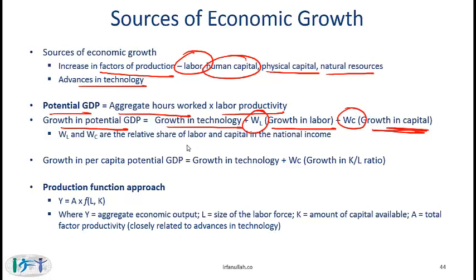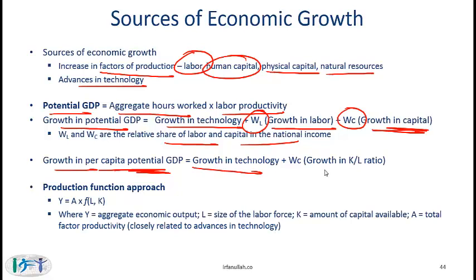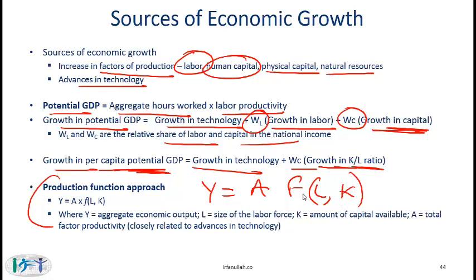The W's shown here are the relative shares of labor and capital in national income — material covered in more detail at level 2. Economists are also concerned with growth in per capita potential GDP, which measures the actual wealth of a nation. Growth in per capita potential GDP is based on growth in technology (how much more productive is the nation) and growth in the capital-to-labor ratio (how much equipment capital per unit of labor). The production function is: output depends on A (technology), and is a function of labor and capital — a simplistic model, but economists mostly model output in terms of labor and capital.